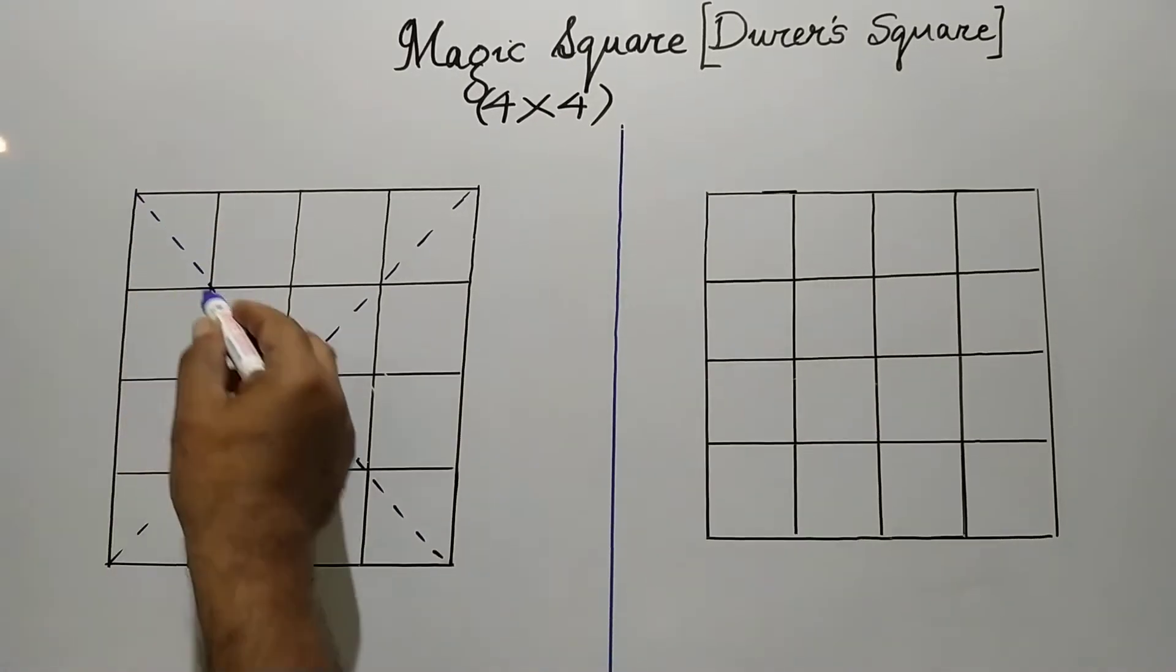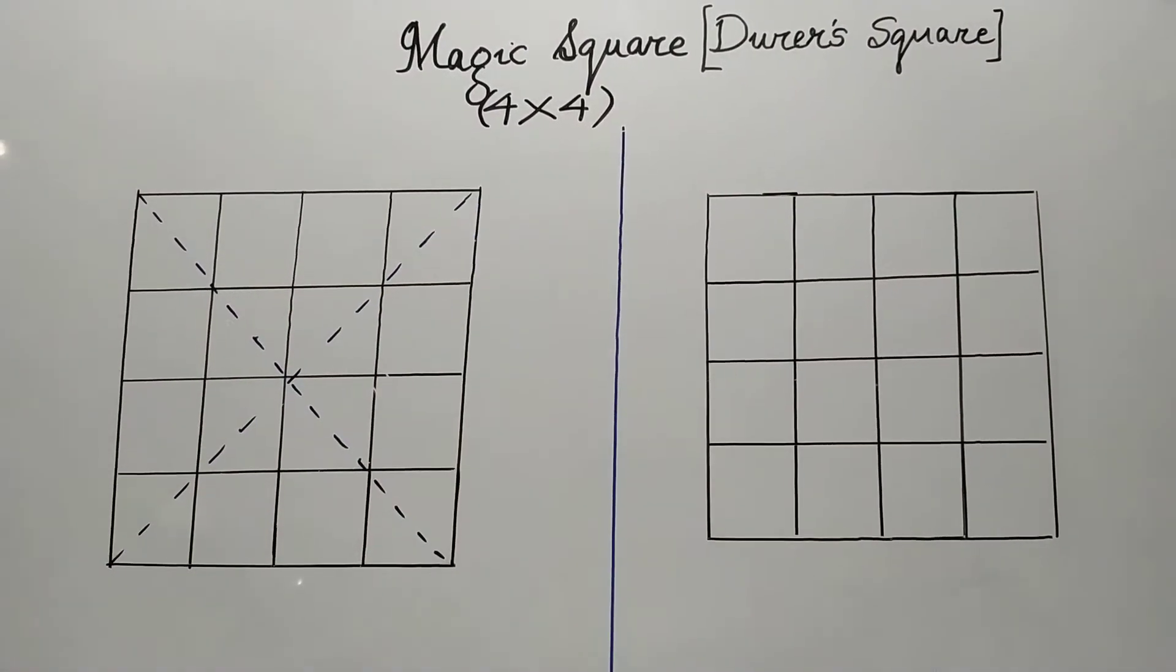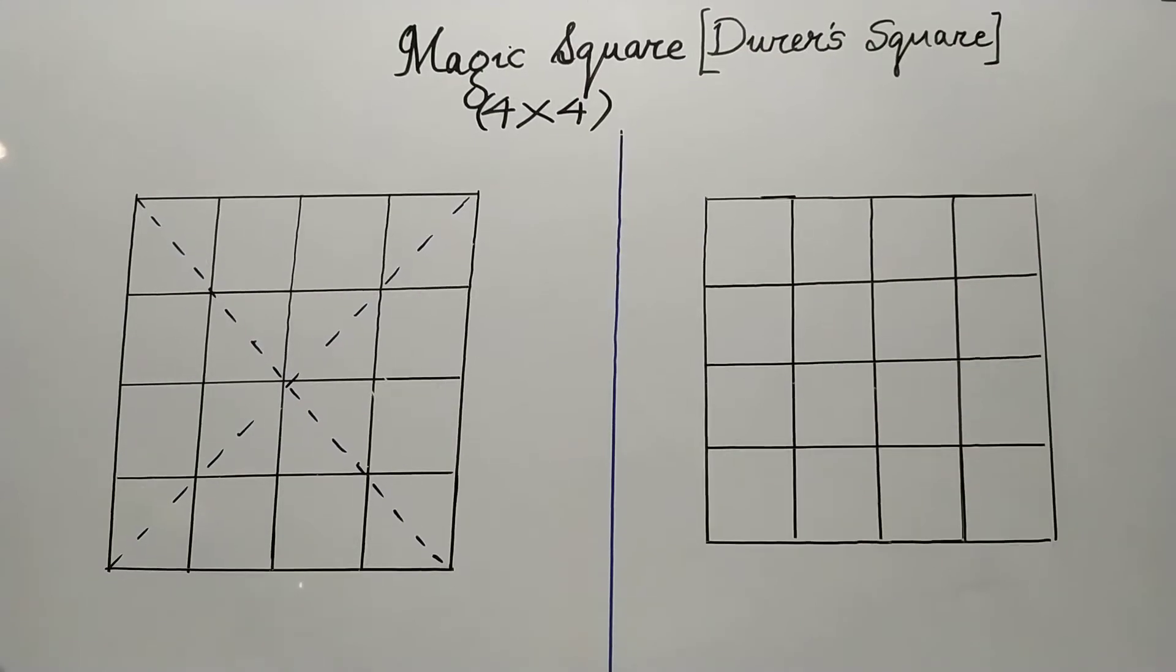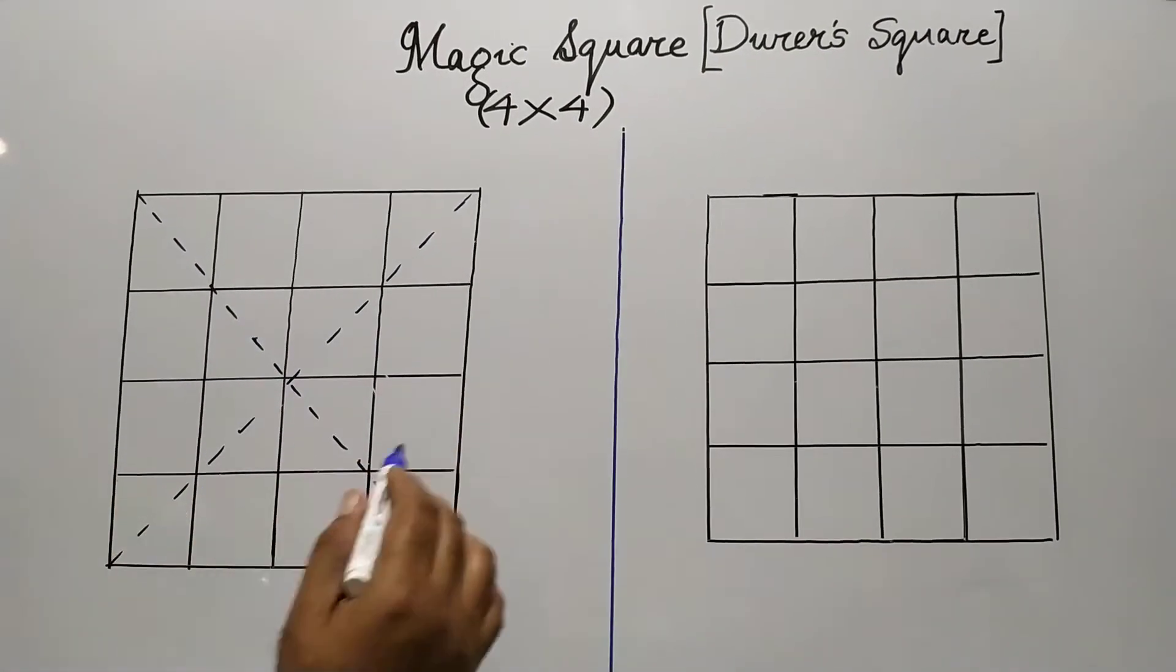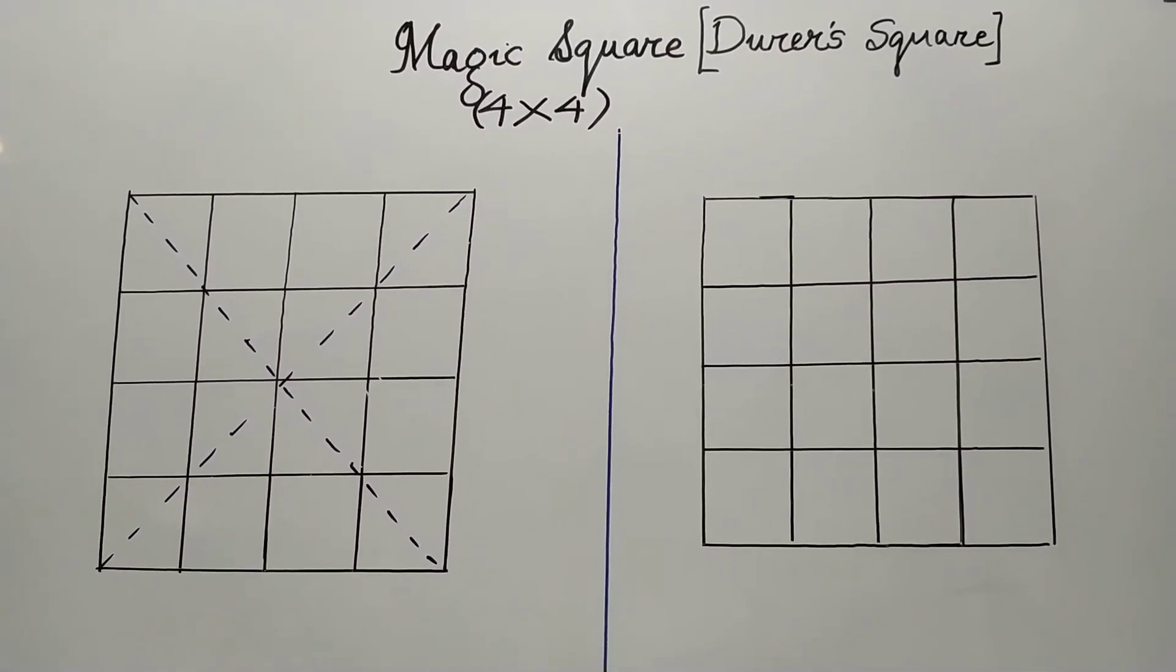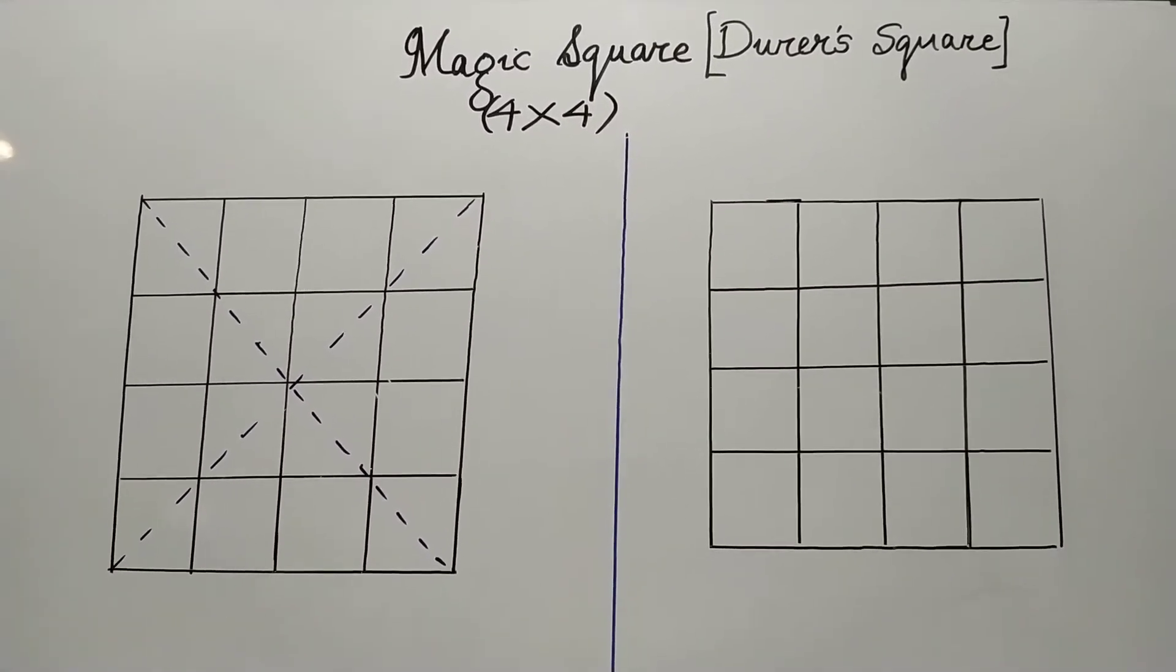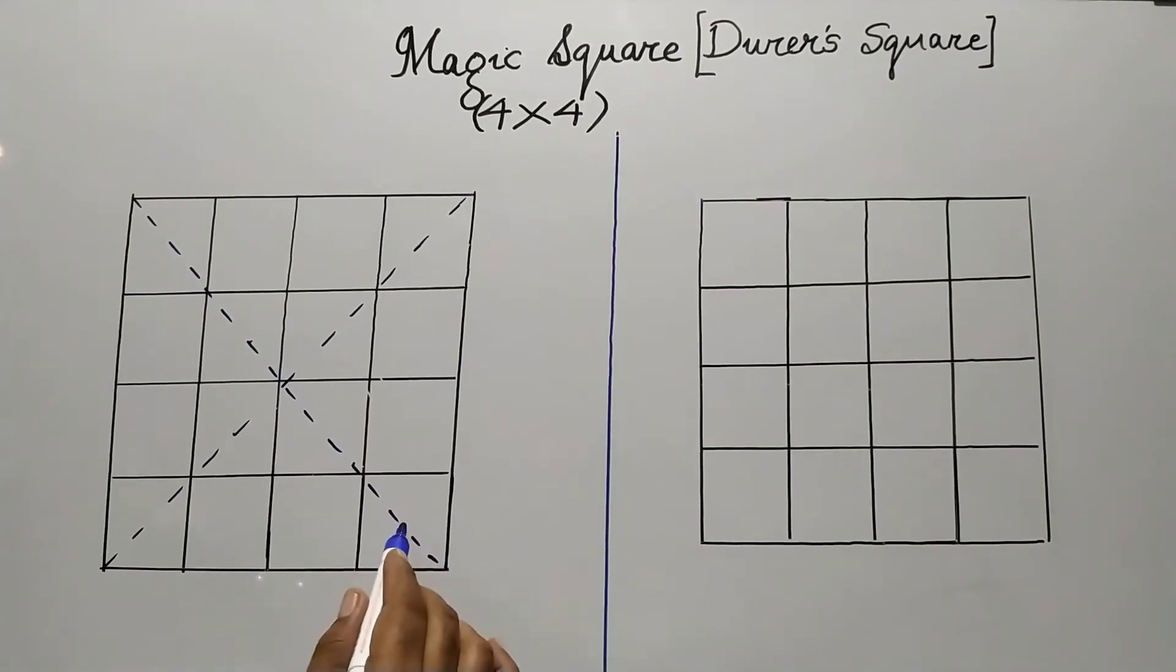I have drawn the principal diagonal and the secondary diagonal. In all these grids, I will now start filling the natural numbers starting from 1 and ending with 16.